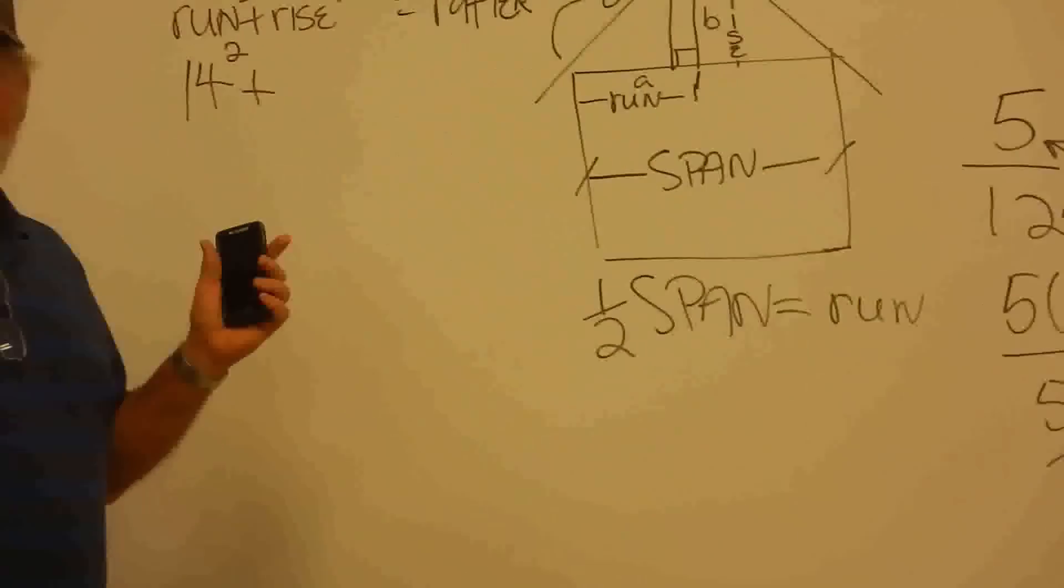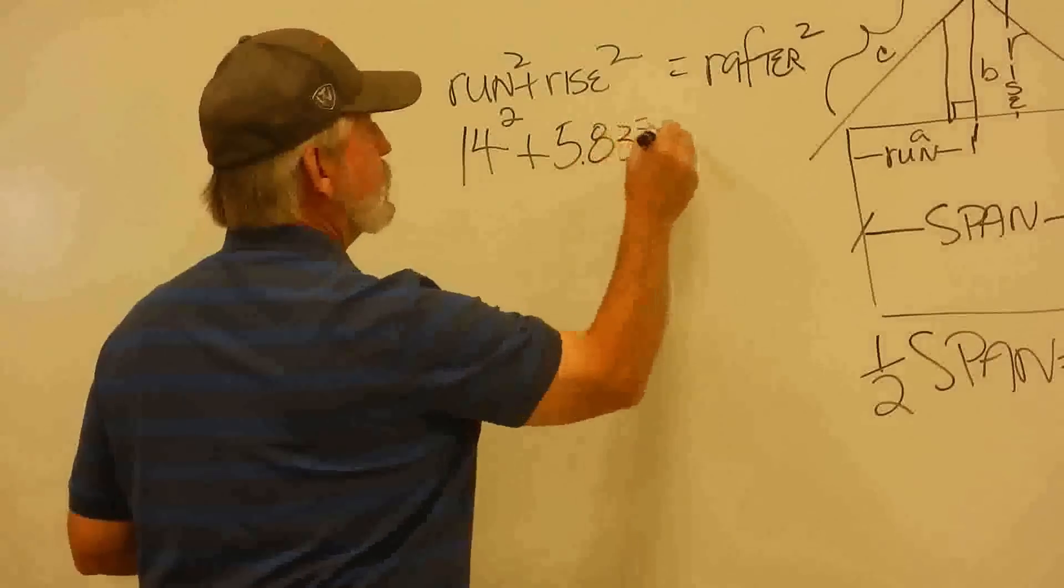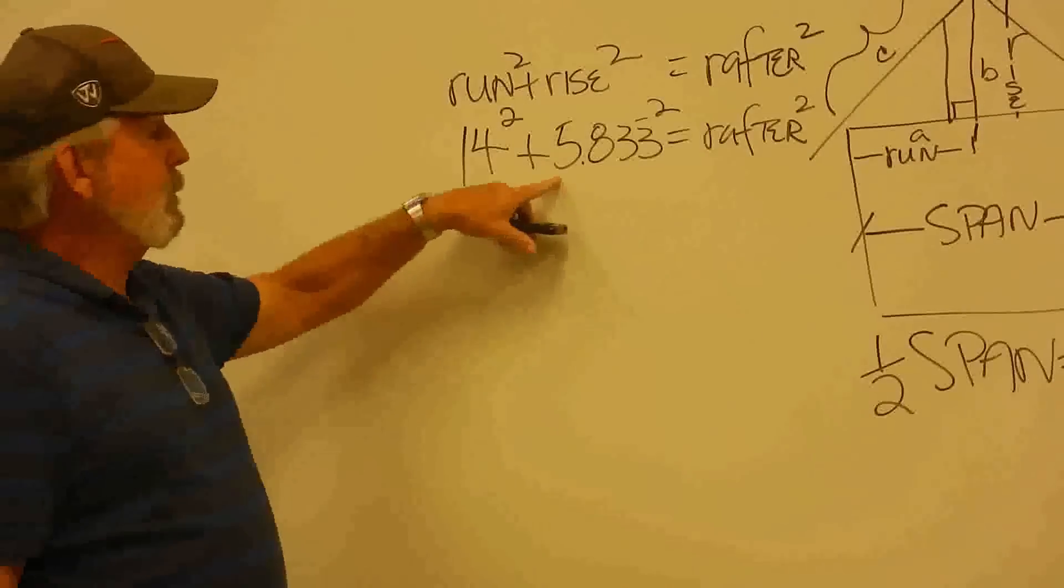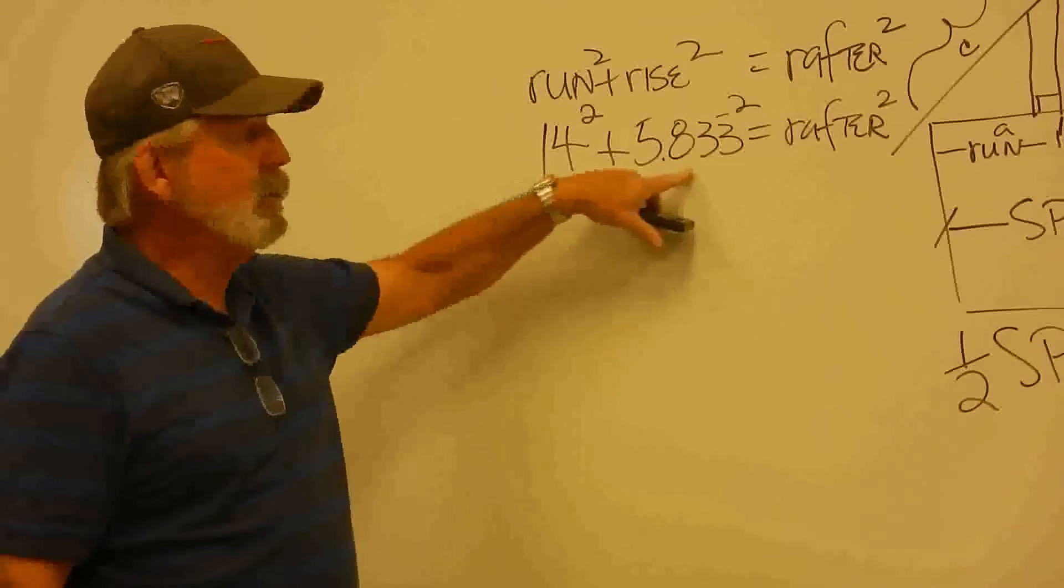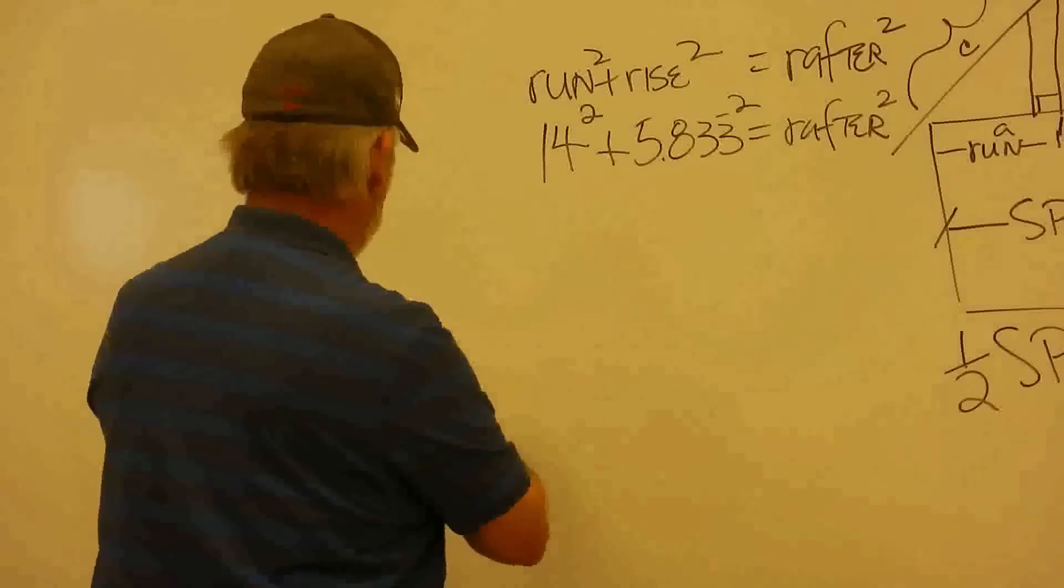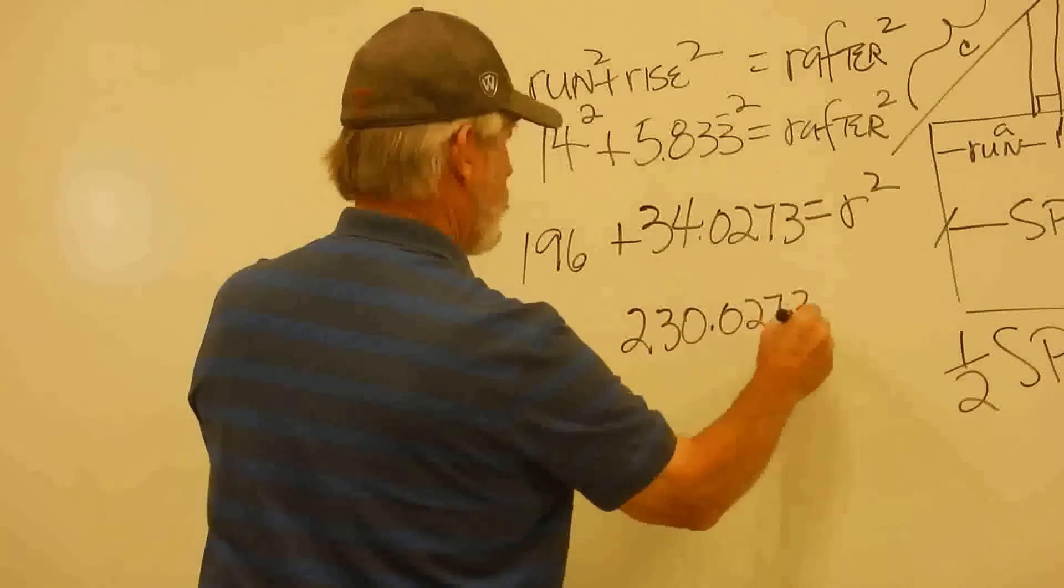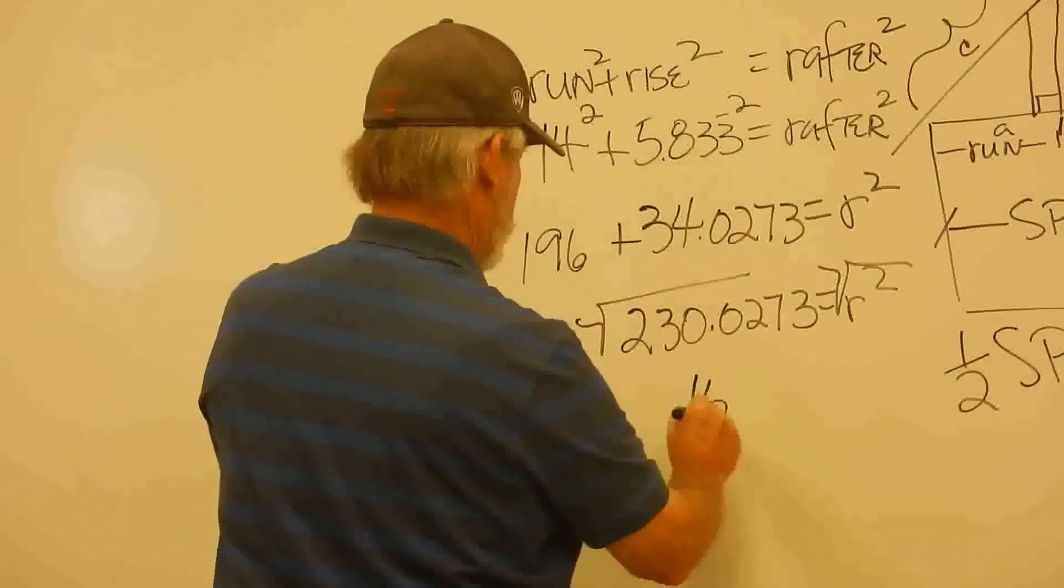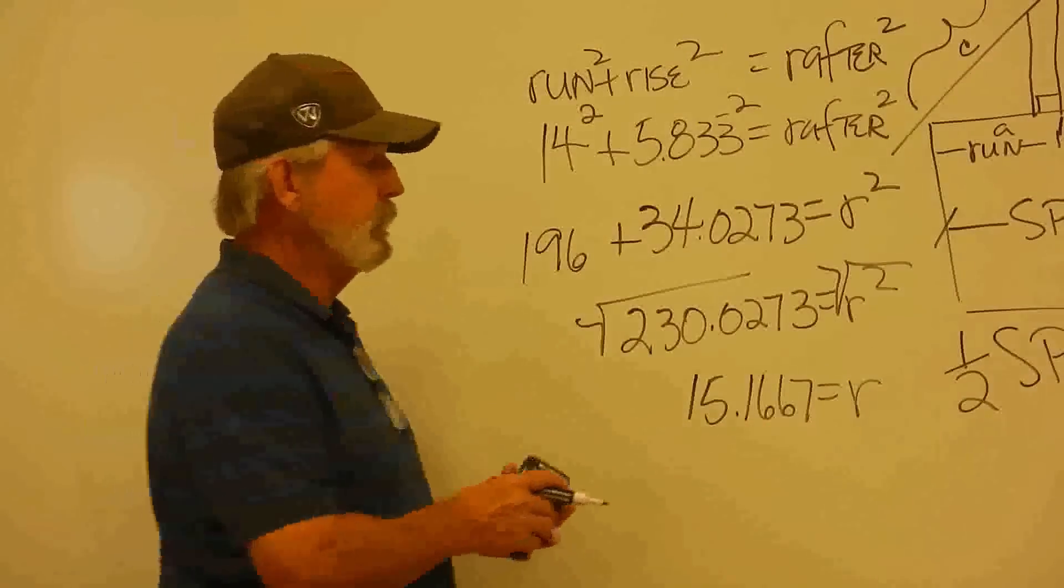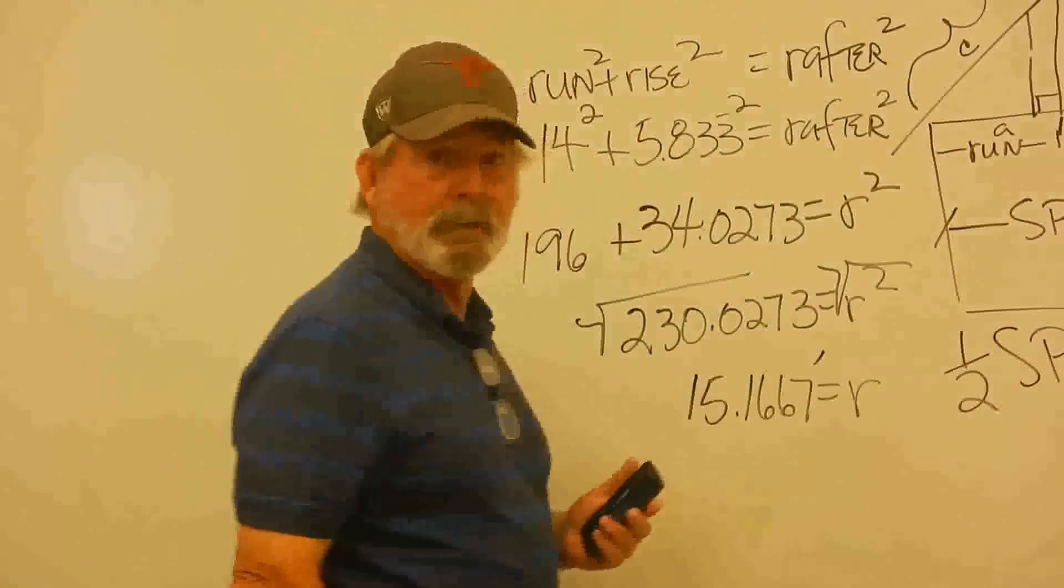So, again, any time I have a numerical value for one of my words, I just plug it right in. Keeping in mind that in the earlier conversation, I want to leave this. I don't want to convert my engineer scale into my architectural scale because I can do this math easier than converting .833 feet into feet and inches. So, I'm going to do the math. Okay. So, this tells me that my rafter now is 15.1667 feet. So, that's what this is if my span is 14 feet and if my rise is 5.8333 feet.